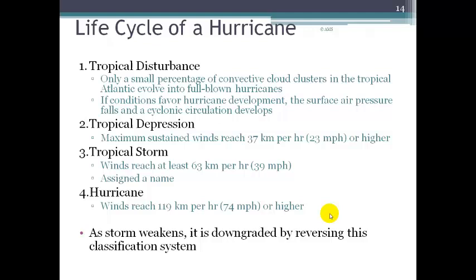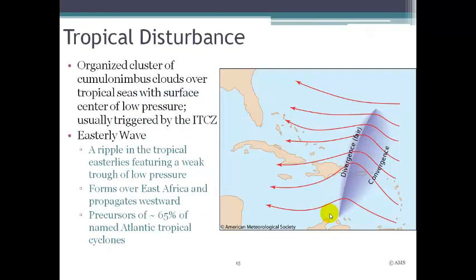At this point, the storm is assigned a name. And then if that tropical storm continues to develop, it may become a hurricane. Hurricane winds reach 74 miles per hour or higher. And if the storm weakens, it's downgraded by reversing the same classification system — so a hurricane that weakens could go back to becoming a tropical storm and on down the line.